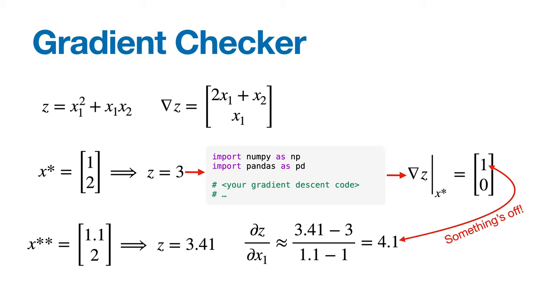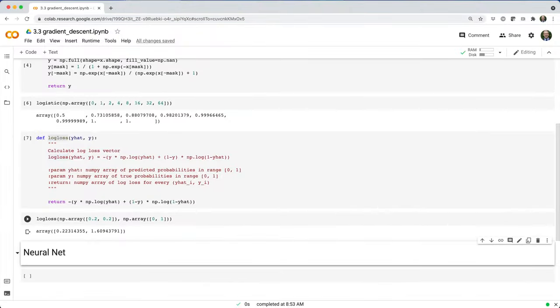Now, gradient checking is slow and expensive, so it's something you only want to do once when you're developing your model, just to make sure you built it correctly. So with that said, pause the video and see if you can implement your first neural network with gradient descent.